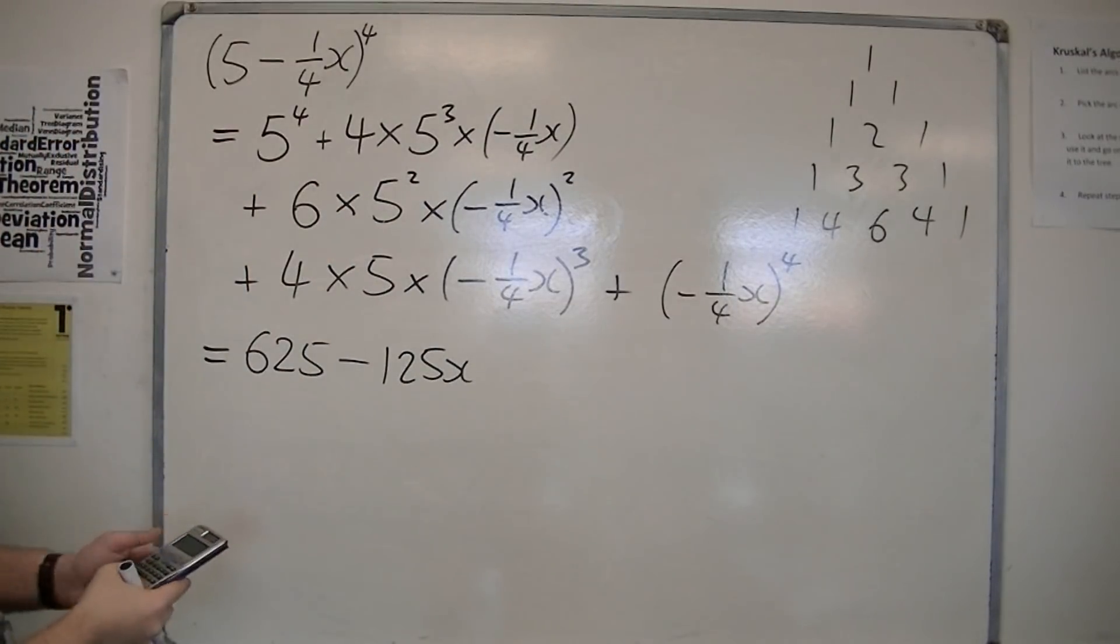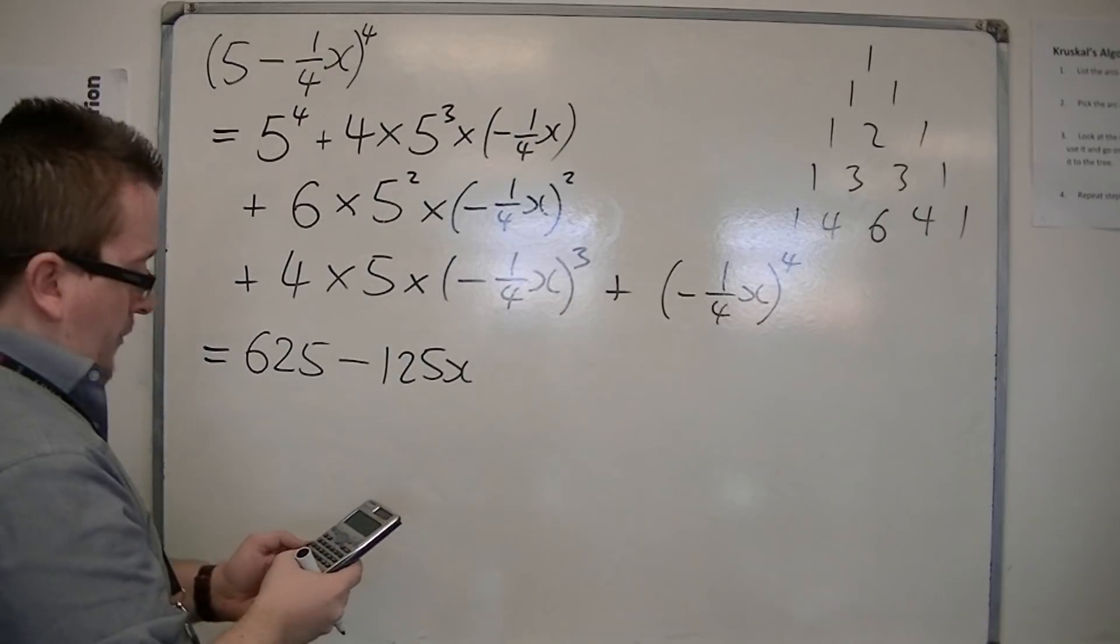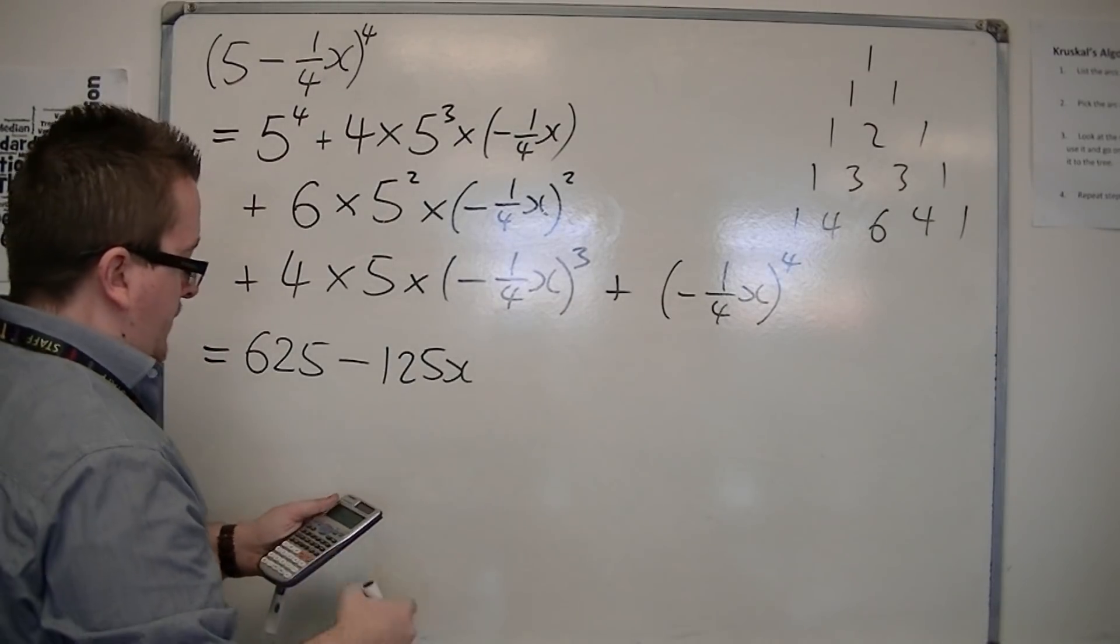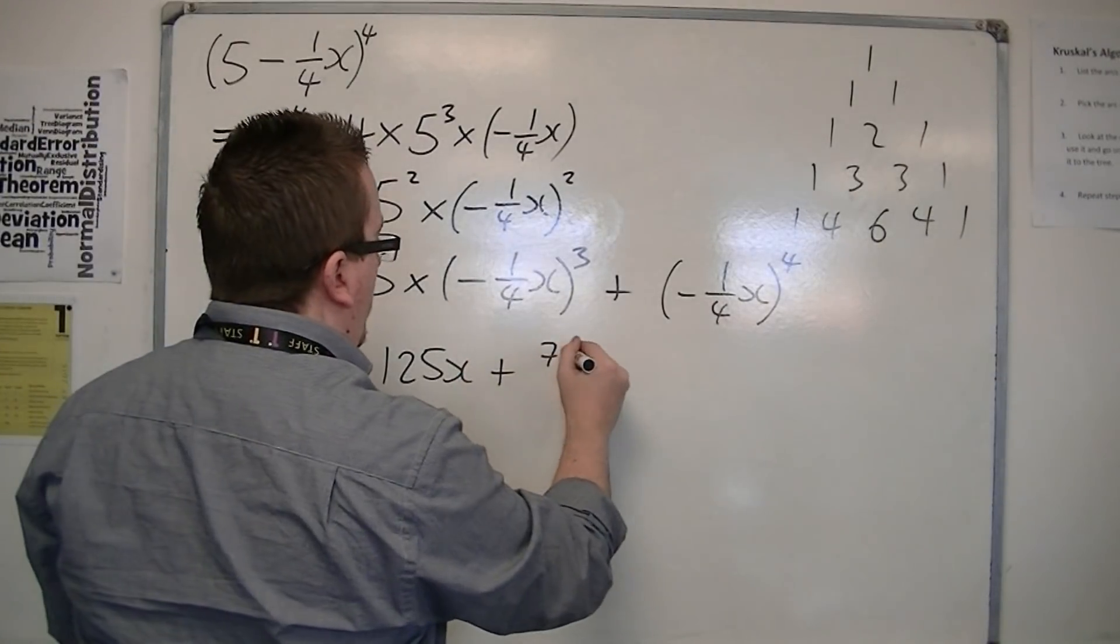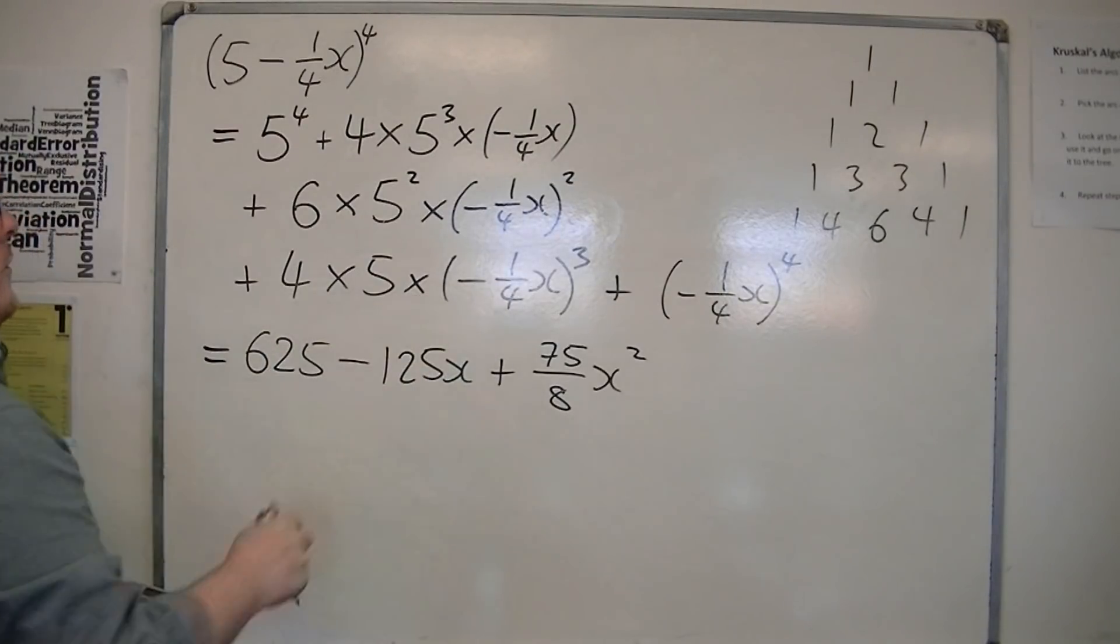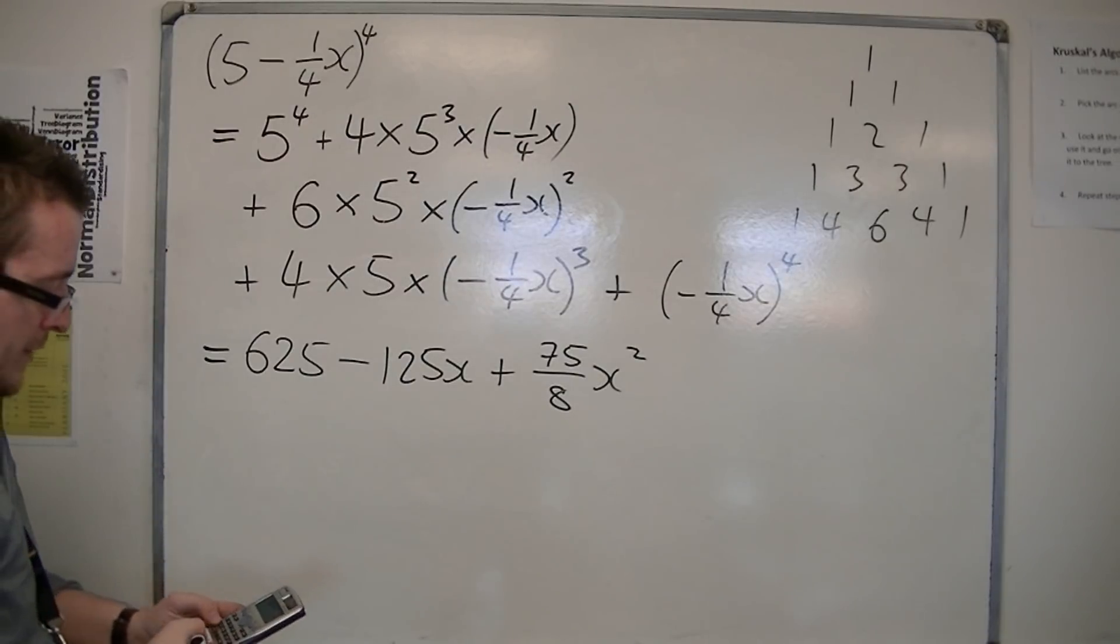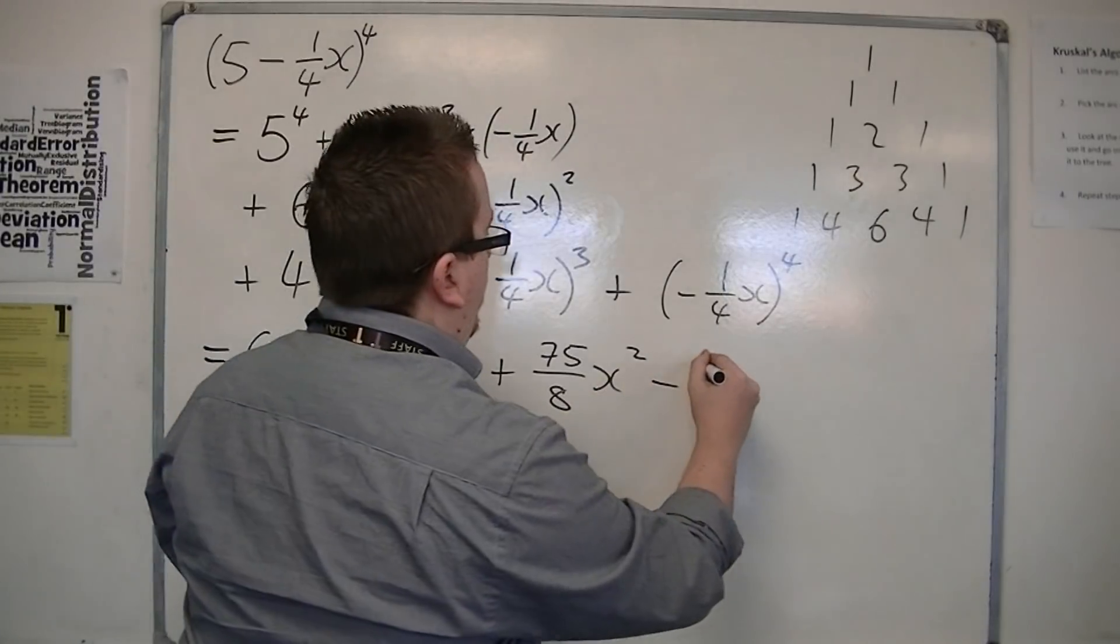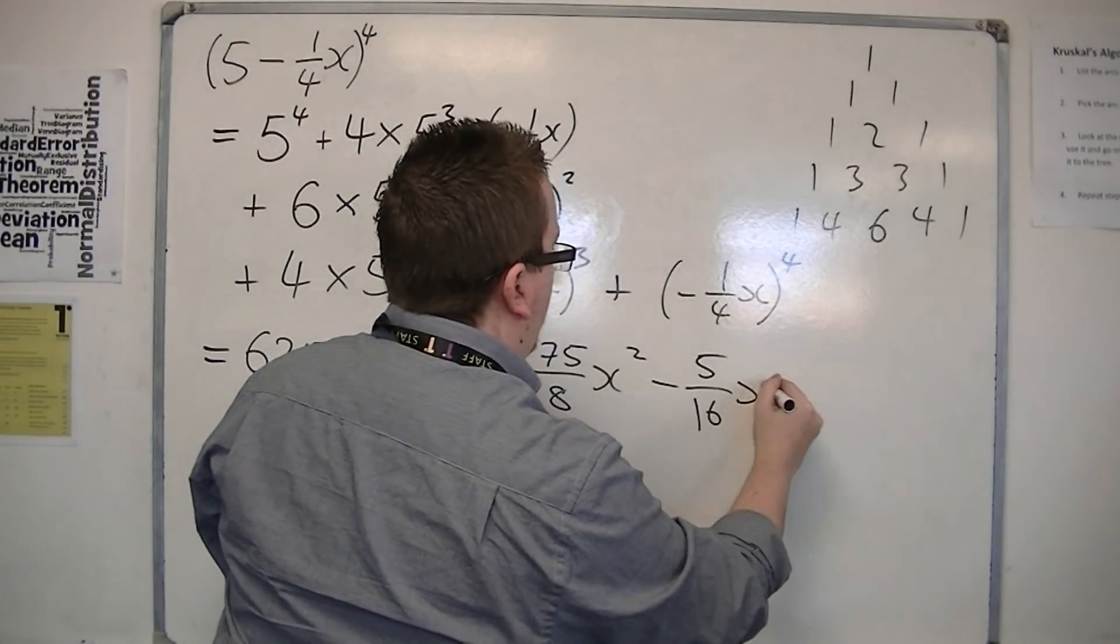Then we've got this one. 6 times 5 squared times minus a quarter squared, which is 75 over 8 x squared. Then we've got the fourth term: 4 times 5 times minus a quarter to the power of 3, which is minus 5 sixteenths x cubed.